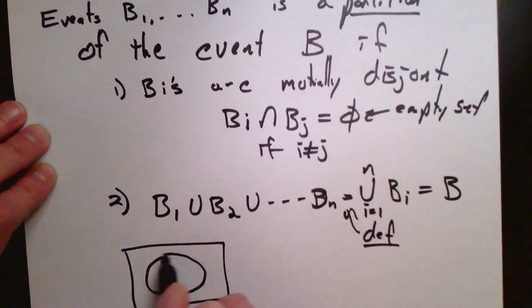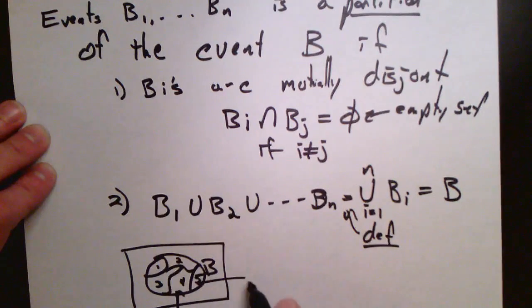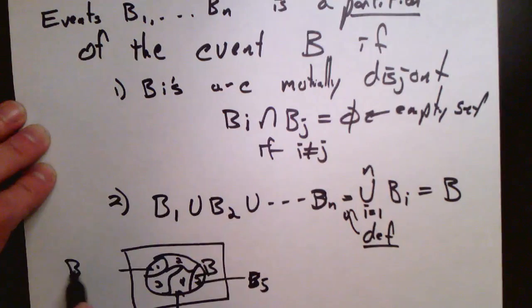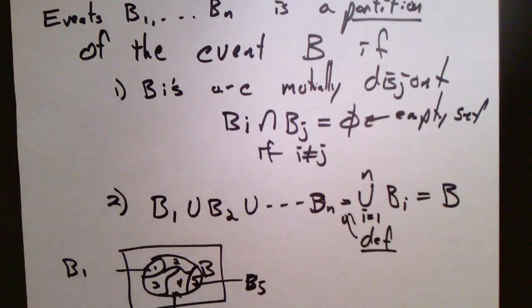Another way of saying this pictorially is that it takes the event b and splits it up into a bunch of small events which are disjoint. So here we've split it into five events, b1, b2, b3, b4, b5, and it's clear that the events are disjoint, they have no overlap, and their union is the entire event.